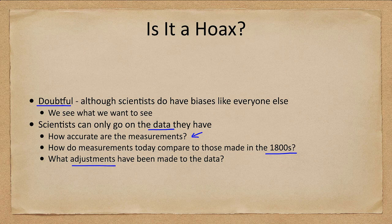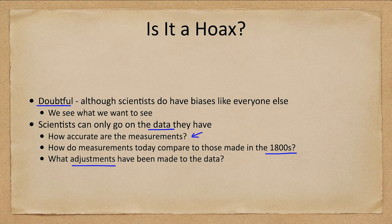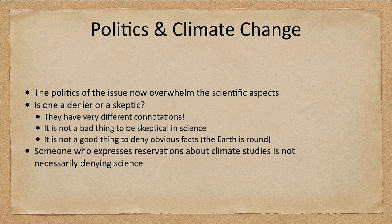How do measurements from today compare to those from the 1800s, and what adjustments have been made to the data? There's nothing wrong with making adjustments — calibrations are a perfectly legitimate part of science. However, those adjustments must be transparent, and original data should always be available, because maybe those adjustments were off and things were either not as bad as thought or worse. This issue also ties into politics, which has really begun to overwhelm the scientific aspects of climate change.